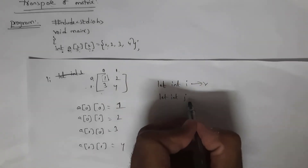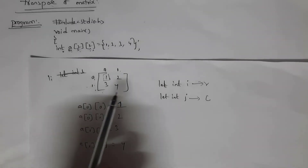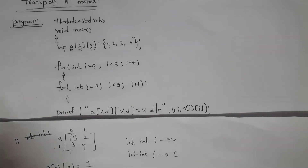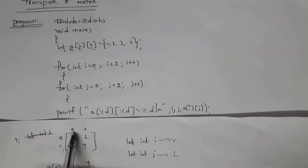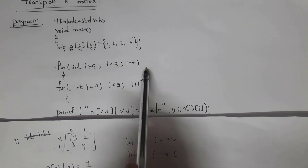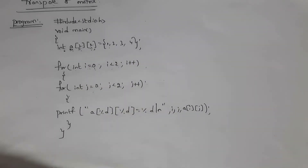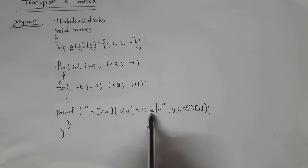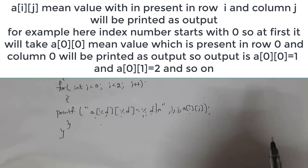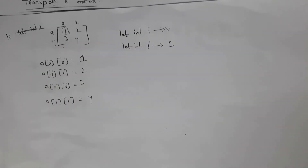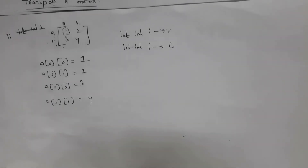Let int i represent rows and int j represent columns. There are two rows and two columns, rows start at 0 and end at 1, similarly columns start at 0 and end at 1. I took two for loops: for(int i=0; i<2; i++) and for(int j=0; j<2; j++). Inside this I written printf with format a[%d][%d] = %d, passing i, j, and a[i][j]. This gives output: a[0][0]=1, a[0][1]=2, a[1][0]=3, a[1][1]=4.